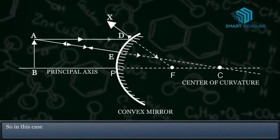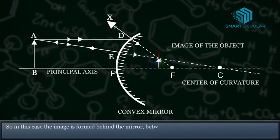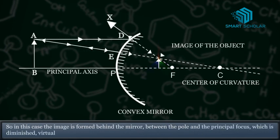So in this case, the image is formed behind the mirror between the pole and the principal focus, which is diminished, virtual, and erect.